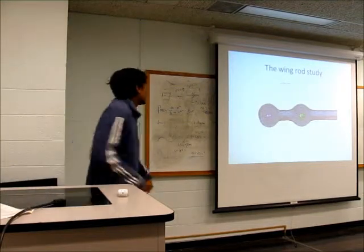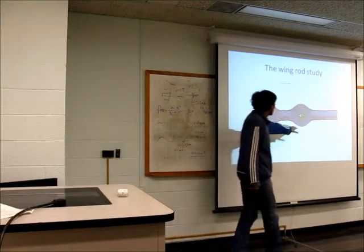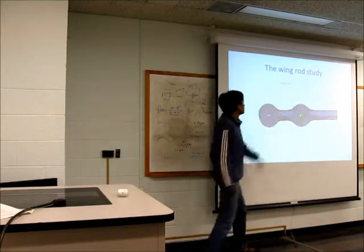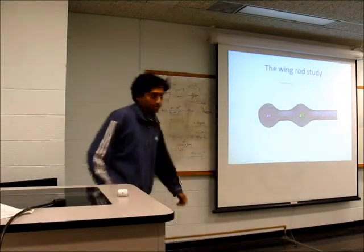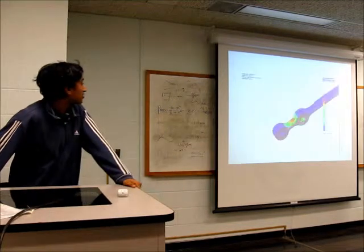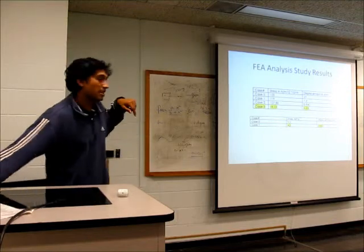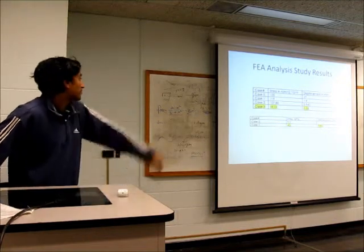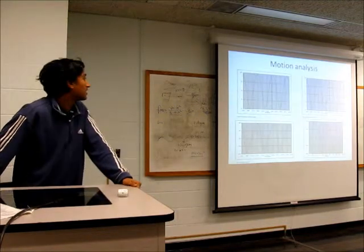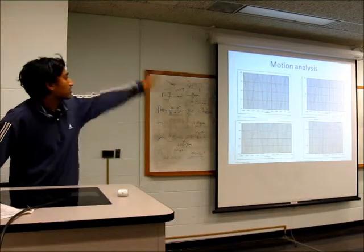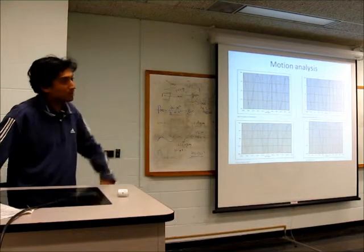In the wing rod study, this was fixed and this motion was given. With this study, that completely broke. So I had to change it completely. Modified it. Again, dimension change and geometry change. My final study was this. Then I did a motion analysis in which I gave complete motion of the wing, ups and downs.